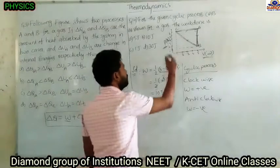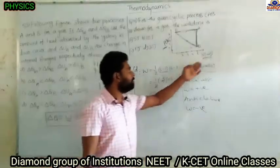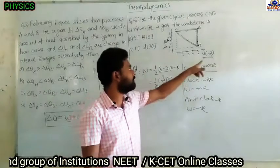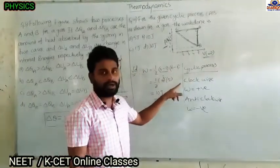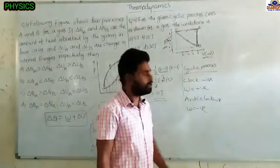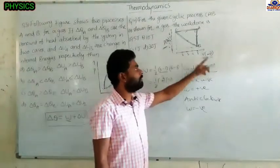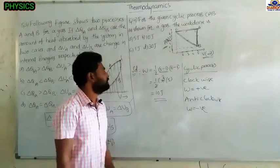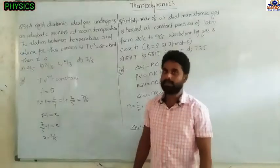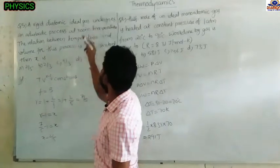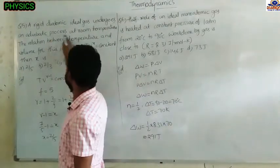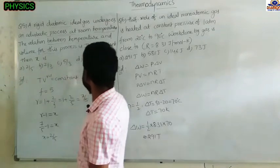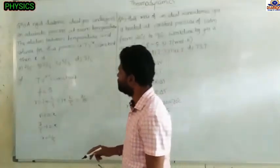Pressure is given in Pascals and volume in meter cubed, so work done directly equals 10 Joules. Note: if they give other units like millimeter cube or 10 to the power 6 meter cube, the powers will change accordingly.